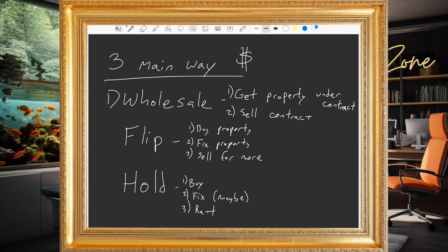Wholesaling is where you get a property under contract and then you sell the contract. You do not have to buy the property. You do not have to have any money. All you have to do is talk to a seller, get them to agree to sell you the property, get it under contract, and then find somebody who actually wants to buy it. You're not actually the buyer.